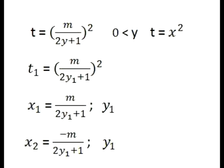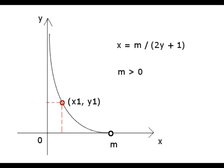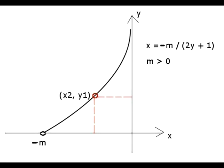It's clear that for any point with coordinates t1 and y1 that satisfies this equation with positive m, there are two points with coordinates x1 and x2 that are equal to m over 2y plus 1 and minus m over 2y plus 1, and that have the same coordinate y1, since y coordinate must always be positive.